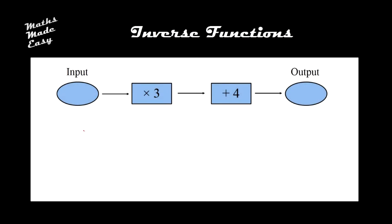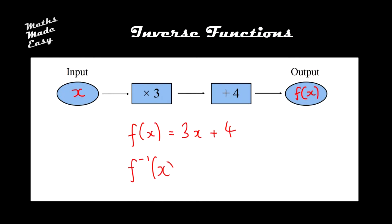Hello and welcome to this video where we're going to be looking at inverse functions. Here I have a function machine. Imagine that I have an input x and an output f of x. So imagine I had x, I multiplied it by 3, I added 4, and that gave me f of x — corresponding to the function f of x equals 3x plus 4. What we're concerned with is something called inverse f of x, denoted by putting a negative 1 up here. That's not to be confused with a power of negative 1 — for example 3 to the negative 1 equals 1 third. This is simply notation for how we write an inverse function.